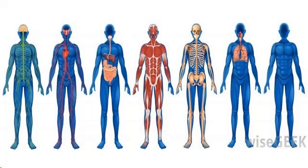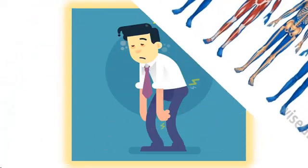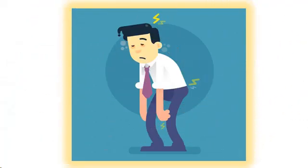The systems of the body are made up of different organs. Each organ plays a specific role to maintain the proper functioning of the body. When one organ is malfunctioning, the human body is affected.